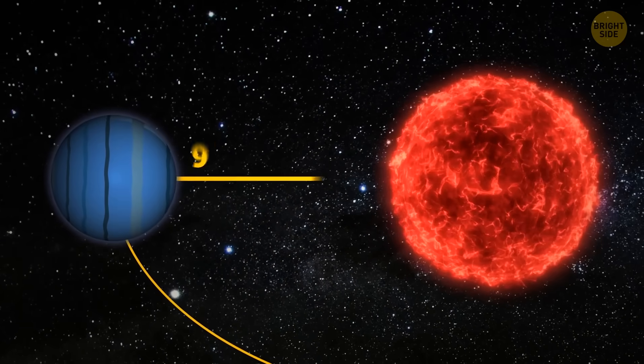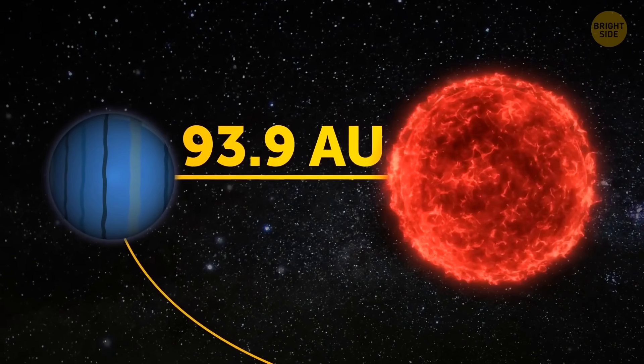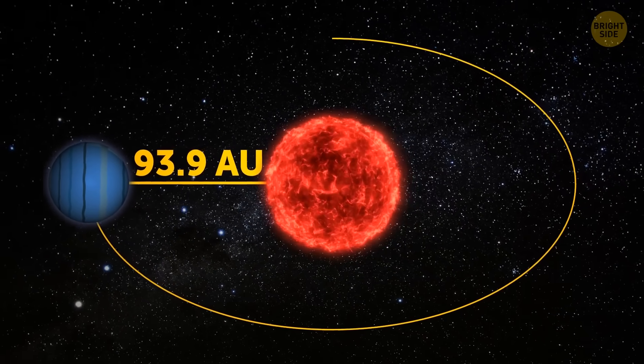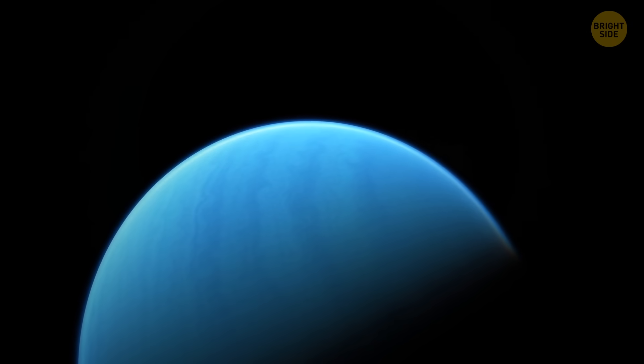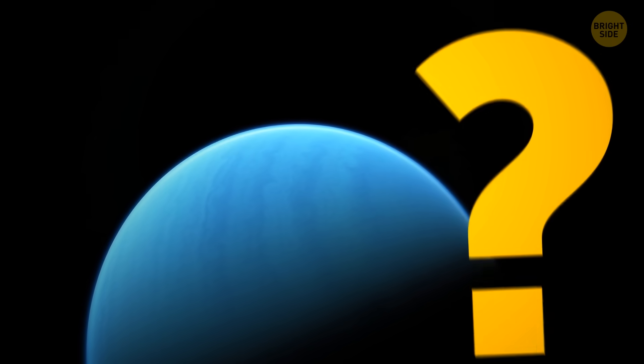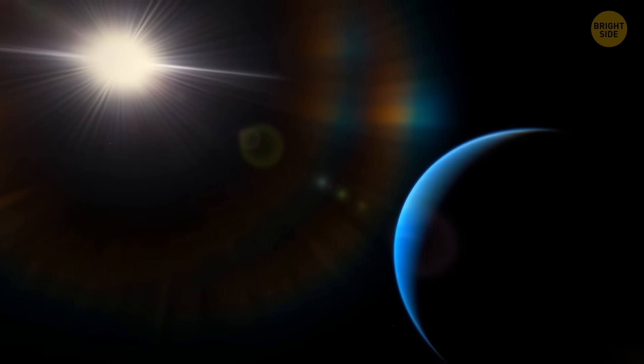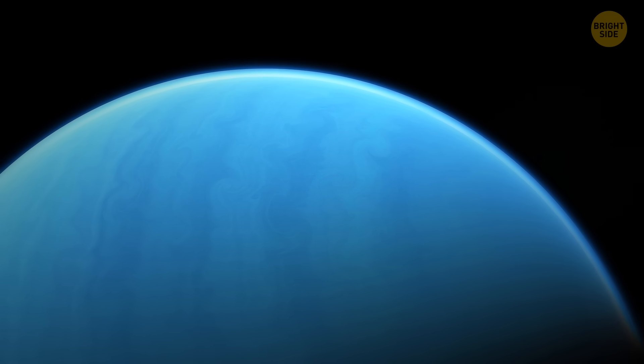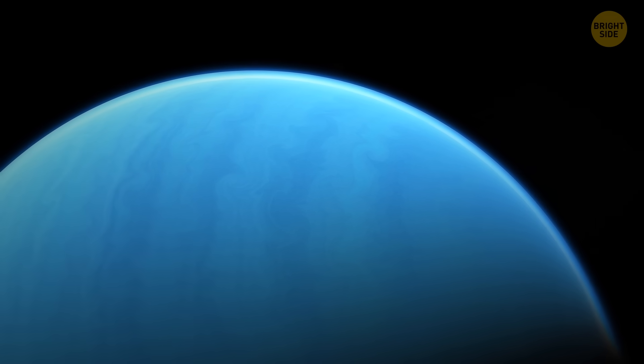Maybe because it's 93.9 AU, astronomical units, away from it. Now, why is the discovery of this planet so amazing? Because according to astronomers, it's been forming in a very bizarre way. Or should I say, is forming, since this gas giant is still in the process.